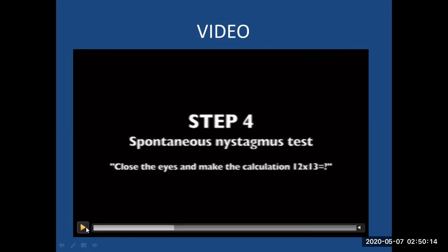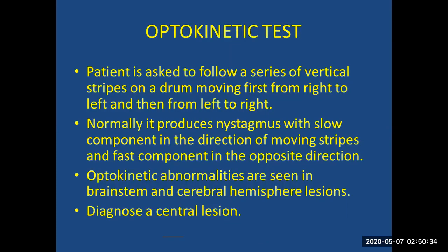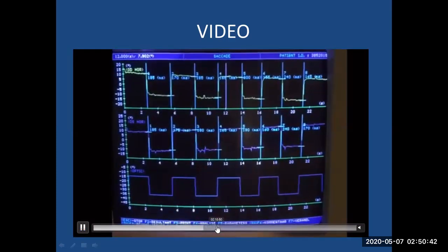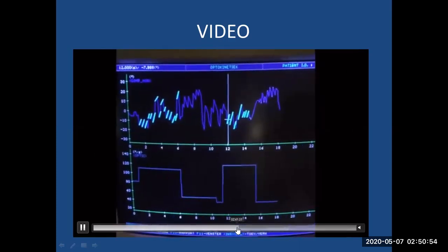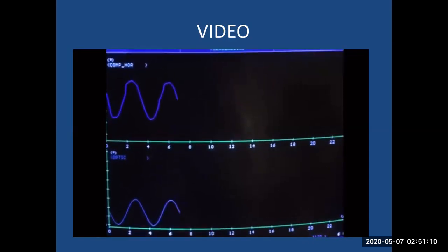For spontaneous nystagmus assessment, the patient closes the eyes and performs mental arithmetic — such as calculating 12 times 13 — to prevent fixation while the ENG records. Smooth pursuit is also tested by asking the patient to follow moving dots, and the graph records the eye movements accordingly.